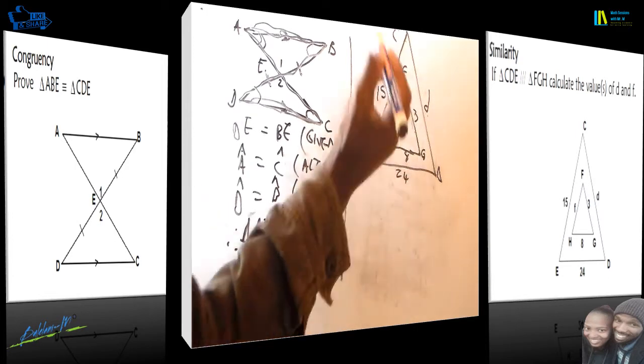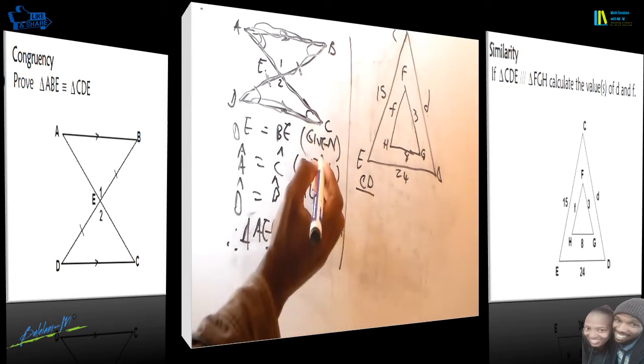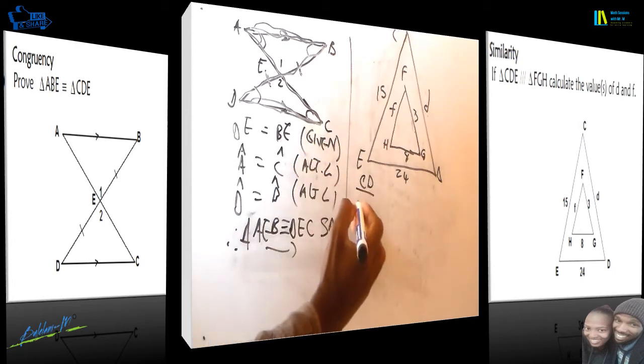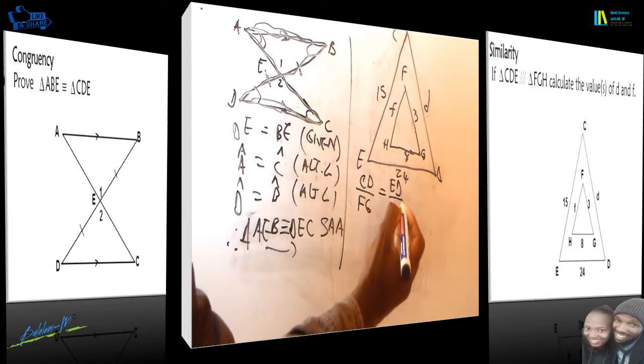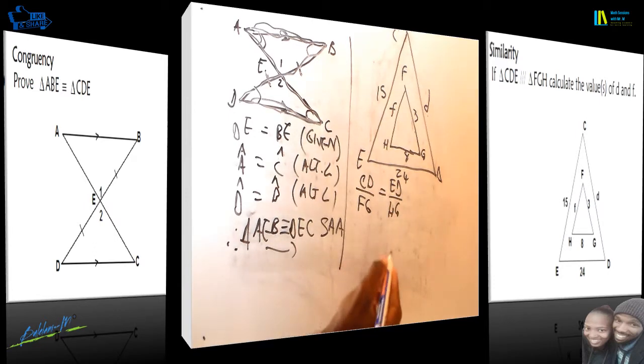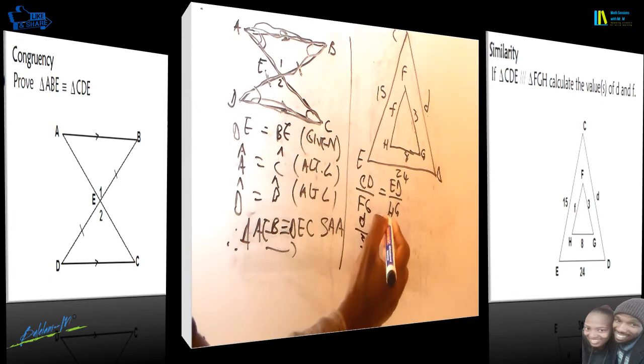Now, because we are looking for the unknown side of the bigger triangle, therefore we are going to say CD over FG is equal to ED over FH. So this side, CD, is the unknown d that we want. It's over 3, is equal to ED is equal to 24 divided by 8, which is HG.